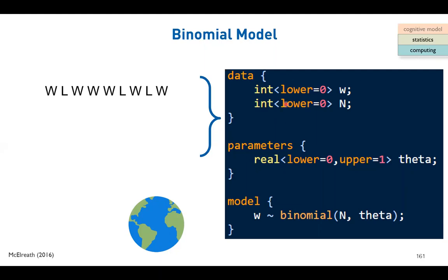The first block is the data block, which defines what we already know about the data - what is observed. Here we declare the variables W and N for the number of water observations and total number of experiments. The next block is parameters, where we declare anything we are interested in but unknown yet - here the theta parameter in the binomial function. The last block, the model block, connects the known data and the unknown parameter.